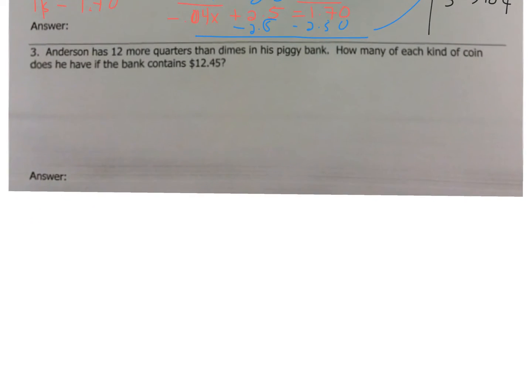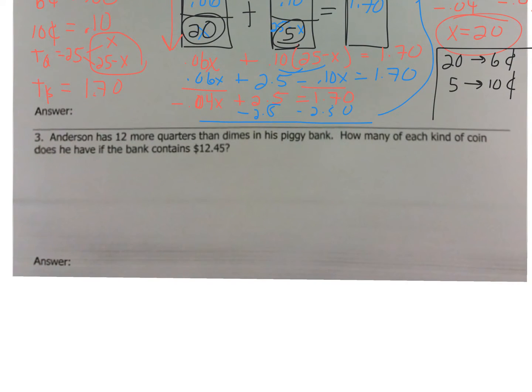Alright. Let's look at number 3. I'll leave that kind of up there so you can see. Last one. Now, this one's a little bit different, but we still treat it the same way. Read the question first. Anderson has 12 more quarters than dimes in his piggy bank. How many of each kind of coin does he have if the bank contains $12.45?